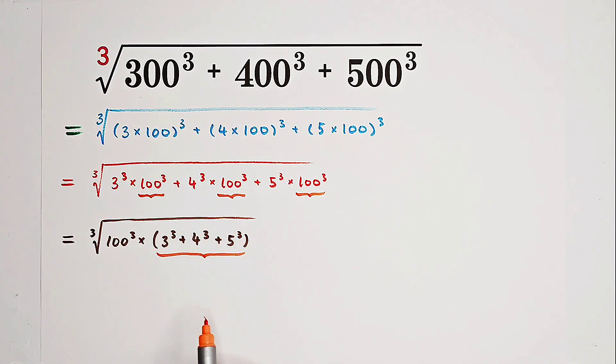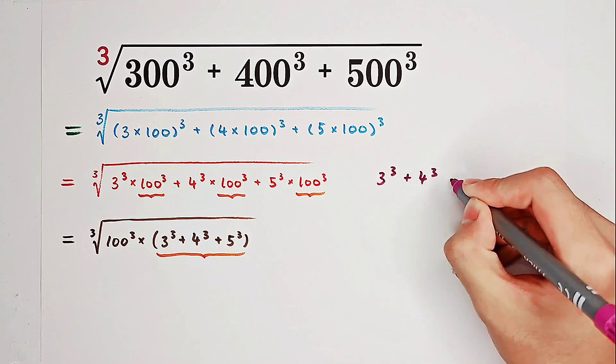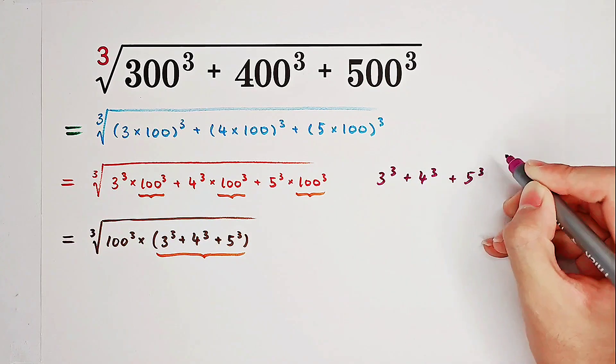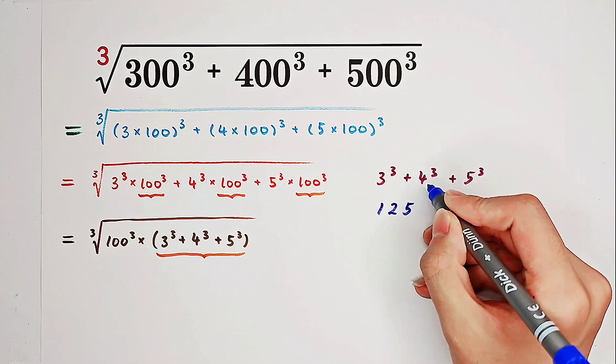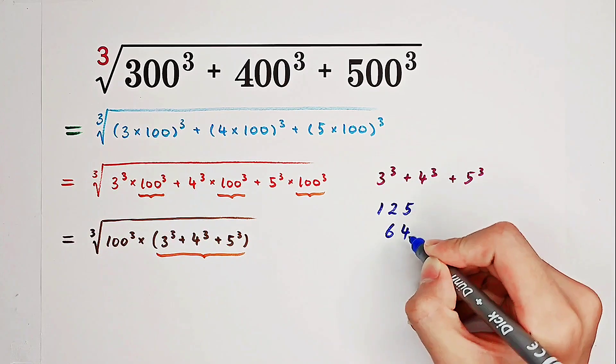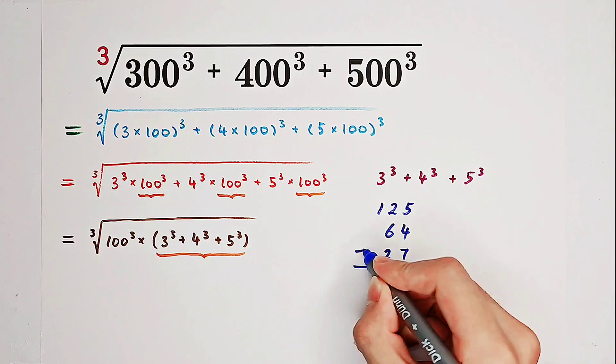Now, let's evaluate 3 cubed plus 4 cubed plus 5 cubed. 5 cubed is 125, 4 cubed is 64, 3 cubed is 27. Add them together.